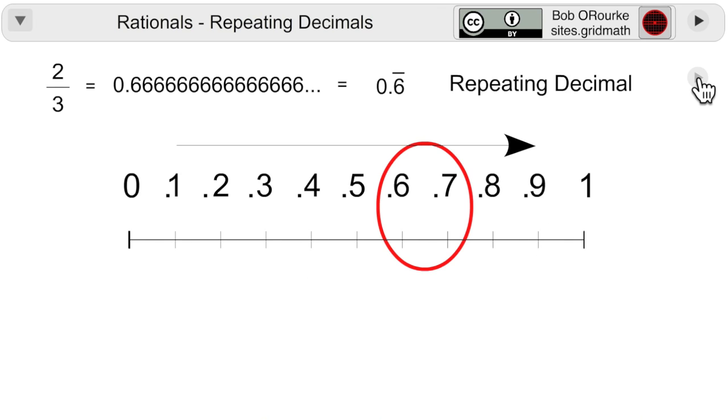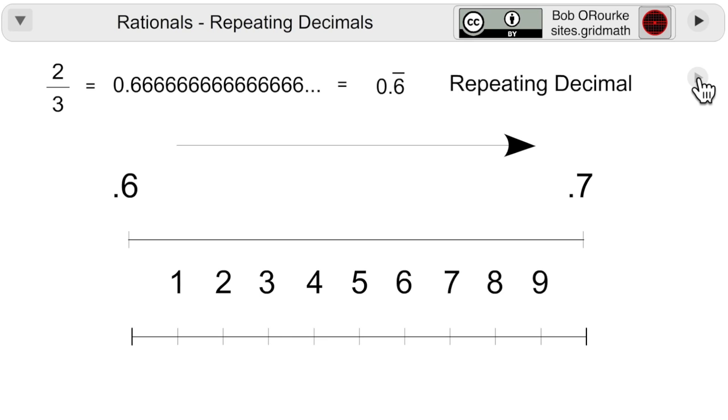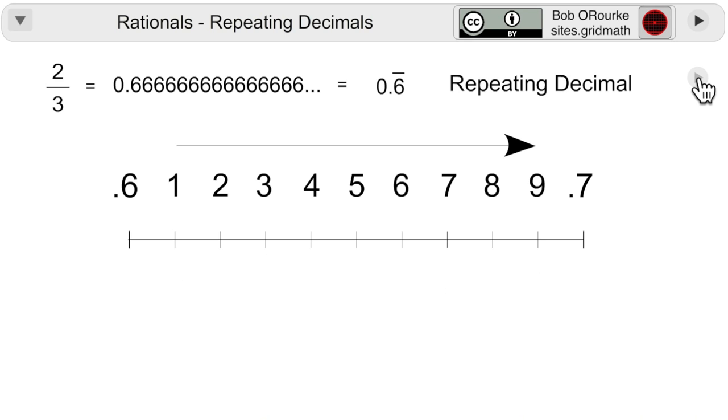Now between point six and point seven we expand that, put in the hundredths, and zoom in a little further. Between sixty-six hundredths and sixty-seven hundredths, the next subdivision will be to the thousandth level, but you can see we're already running out of room.